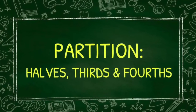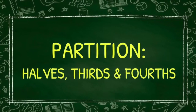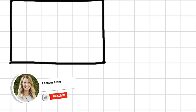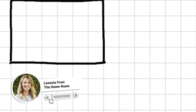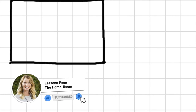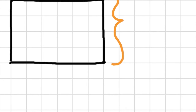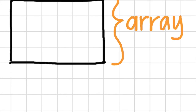Welcome back, students. This is Unit 7, Lesson 2. Let's review — who can guess what this right here is called from yesterday's activity? Is it a row? Is it a column? Or is it an array? That's right. This is an example of an array, and an array is created with equal groups of columns and rows.